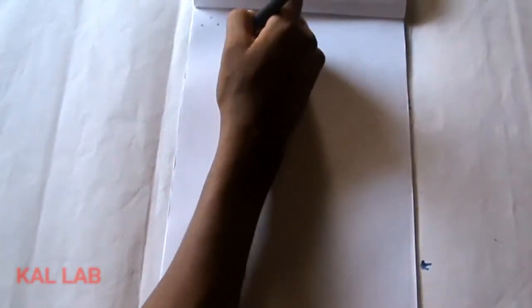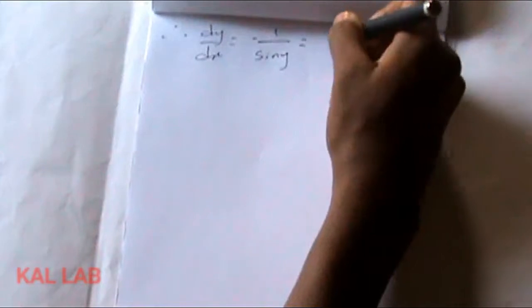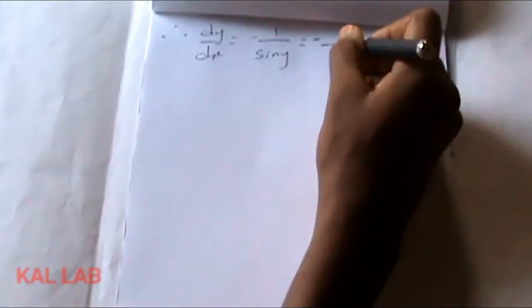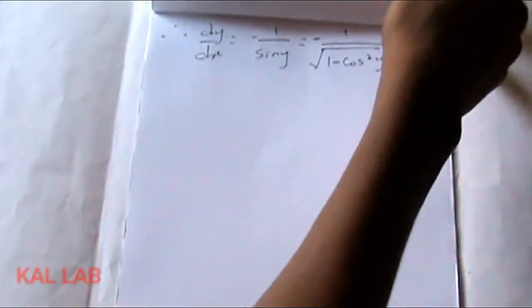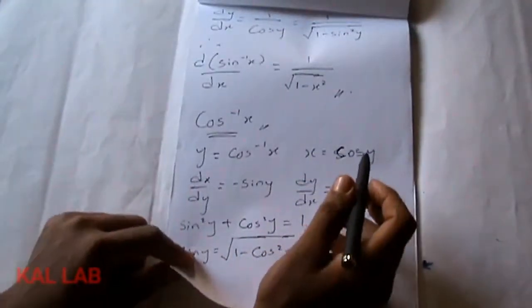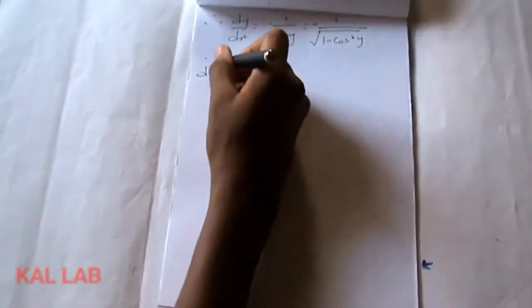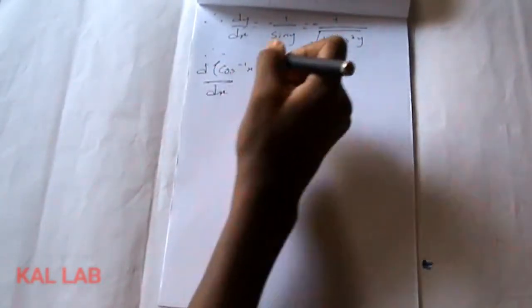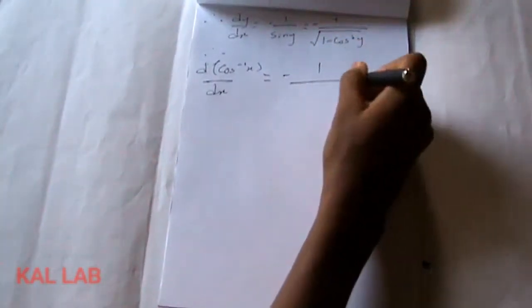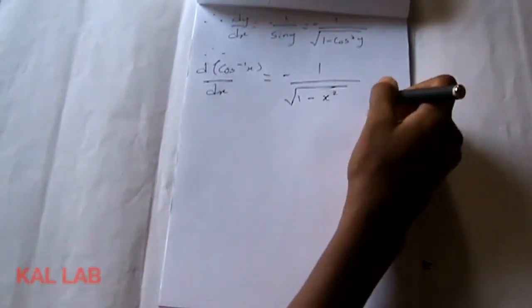So dy/dx, which was −1 over sin y, becomes −1 over √(1 − cos²y). Since x = cos y, cos²y = x², and therefore the derivative of cos⁻¹(x) with respect to x equals −1 over √(1 − x²).